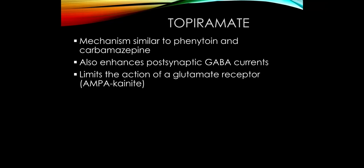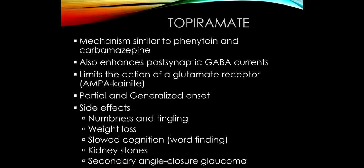Topiramate is one of the most commonly prescribed medications in neurology because it's an effective anticonvulsant and also a great medication for migraine prevention. It acts on the sodium channels like phenytoin and carbamazepine, enhances GABA, and also acts against the glutamate receptor AMPA. This combination of mechanisms makes it broad spectrum for both partial and generalized onset seizures. The side effects of topiramate are unique and really worthwhile remembering, especially because it's commonly used.